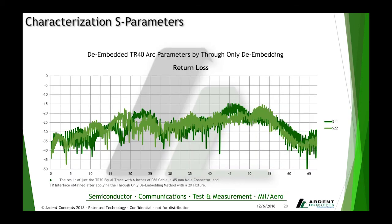Here is our return loss for the same connector — six-inch cable with 086 cable and 1.85 millimeter male connectors. We stay below that -10 dB threshold, hovering around -15 dB as our maximum. There's a -15 dB bump from about 45 GHz to 50 GHz, then it returns to around -20 dB. We are very impressed with this data and feel we have a very good product.